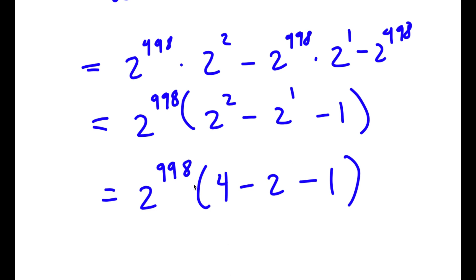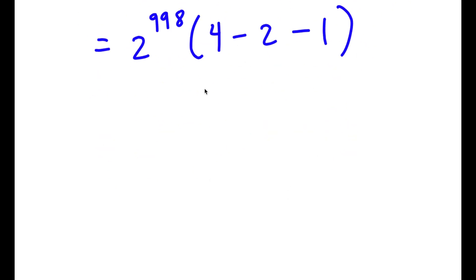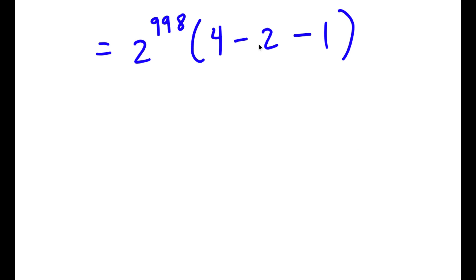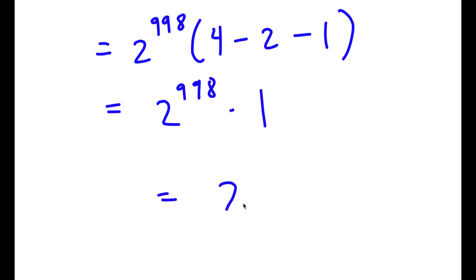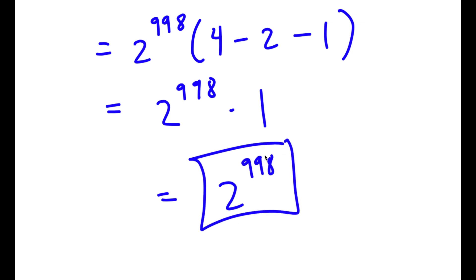So now I have 2 to the power of 998 times 4 minus 2 minus 1. To simplify: 4 minus 2 is 2, and 2 minus 1 is 1. So I have 2 to the power of 998 times 1, which is simply equal to 2 to the power of 998. So this is my answer.